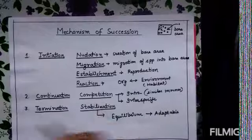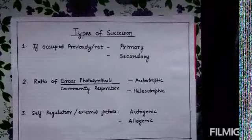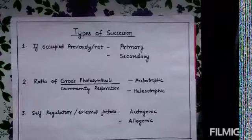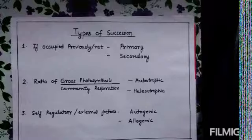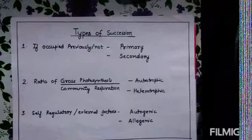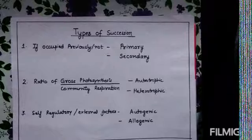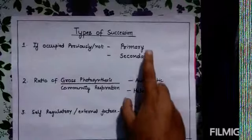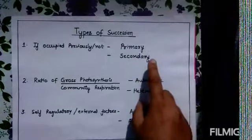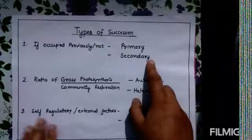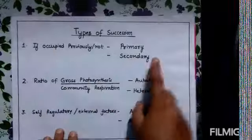Now come the different types of succession. In types of succession, whether the area was occupied previously or not is the basis for two types: primary succession and secondary succession. Primary succession is when the area has not been previously occupied by any community or any species — a bare area is being inhabited by a new species. Secondary succession occurs when a community migrates into or occupies an area where primary succession has already occurred.